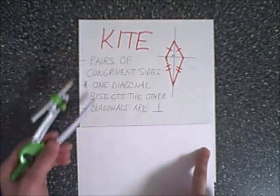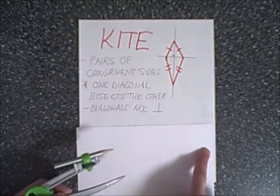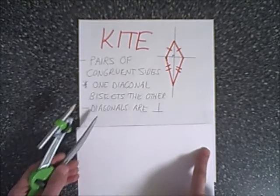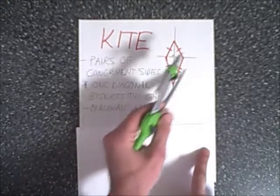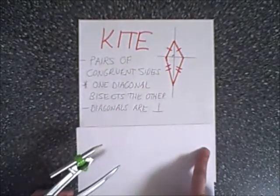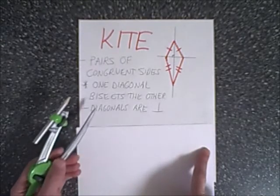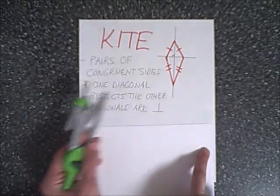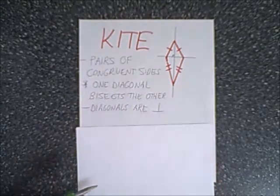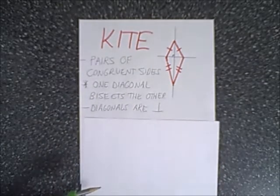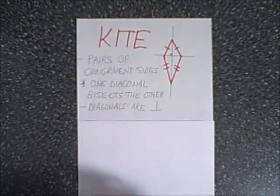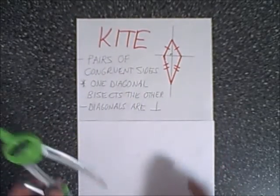We have a pair of congruent sides, which we'll use the compass for the lengths. The diagonals are perpendicular, which is going to be very helpful when we design this. And most importantly, one diagonal bisects the other. So basically, we just need to draw a perpendicular bisector, and from there we'll be able to fill in the rest of the kite.